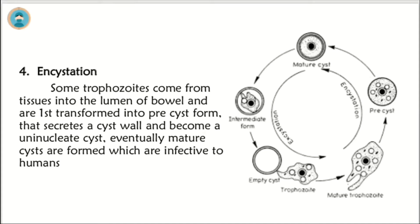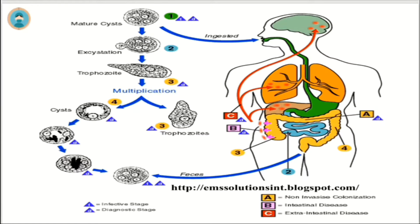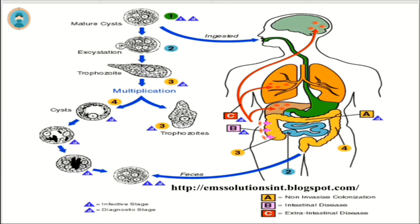The mature cysts have four nuclei inside them. In the diagrammatic explanation of the life cycle: firstly, the mature cysts, after ingestion and excystation, release trophozoites. The trophozoites multiply, grow and invade. But some of the trophozoites convert into pre-cysts, which then convert into mature cysts and are released in faeces. Sometimes the faeces may also contain trophozoites.